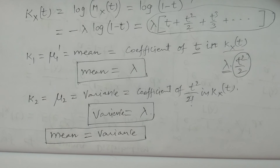Hope you understand. This is the calculation of mean and variance of gamma distribution. Thank you.